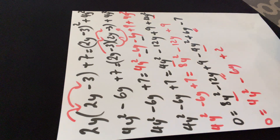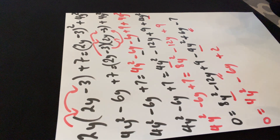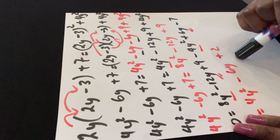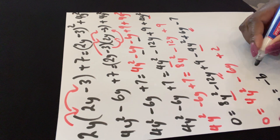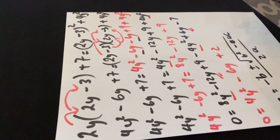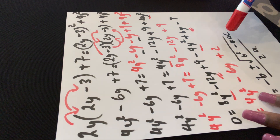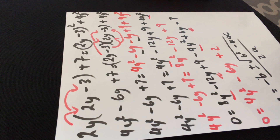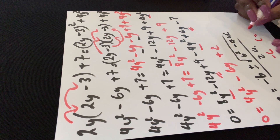The next step is to use the quadratic formula: y = (−b ± √(b² − 4ac)) / 2a. I need to identify a, b, and c from 4y² − 6y + 2 = 0. So a = 4, b = −6, and c = 2. Now I just put these values into the quadratic formula and solve.